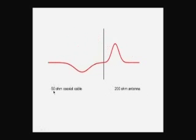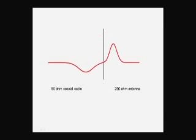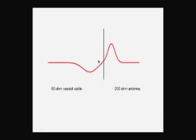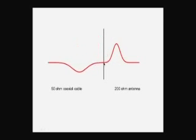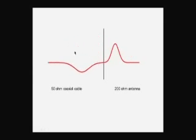So we have an impedance mismatch here. We have 50 ohm coaxial cable attempting to feed a 200 ohm antenna. When that happens some of the power goes forward but a significant portion of it is reflected back down that feed line back toward the transmitter.